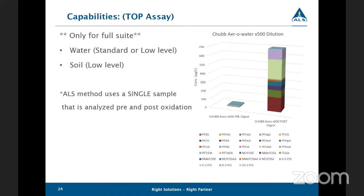Important to note that the TOP assay can only be done using the full suite of PFAS compounds — it can't be applied to any of the condensed packages. For water, you do have the option to do the standard level or the low level for the TOP assay. For the analysis, we use a single sample analyzed pre and post-oxidization, to avoid using a duplicate and limit sample variability. The graph on the right shows an example of the TOP assay being performed on an AFFF product — on the left is pre-oxidization and on the right post-oxidization, and you can see the significant jump in concentrations.